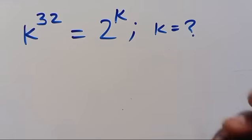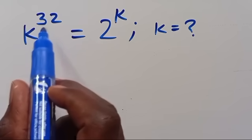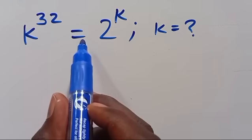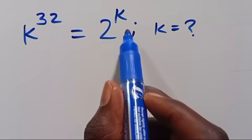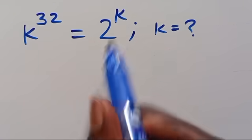What is the value of K? Given that K to the power of 32 equals K to the power of 2 to the power of K.